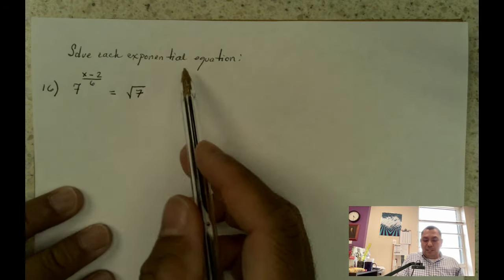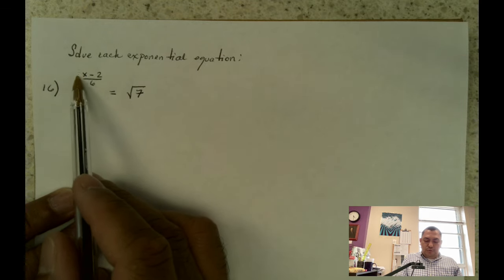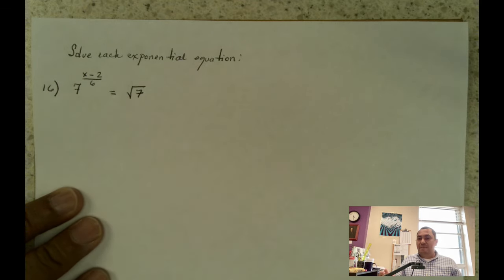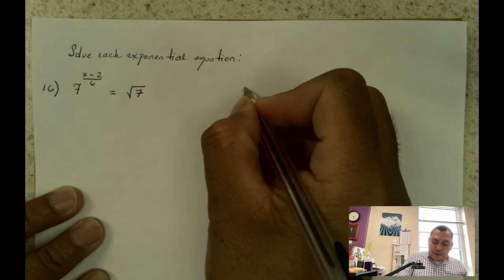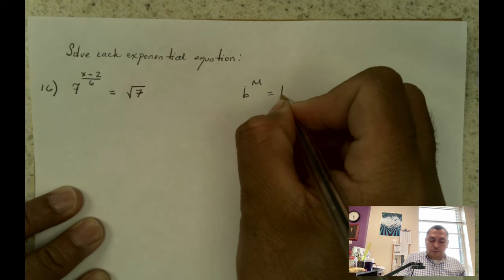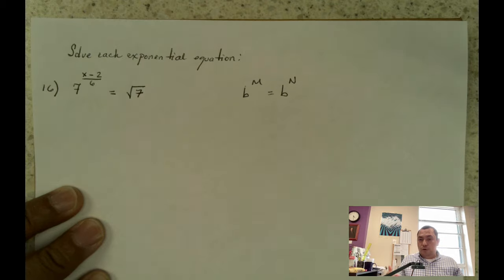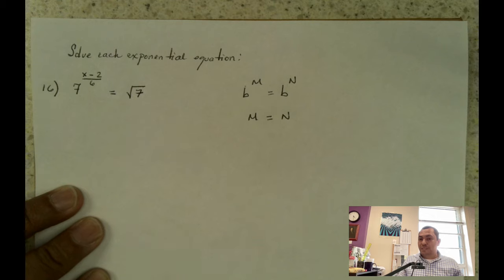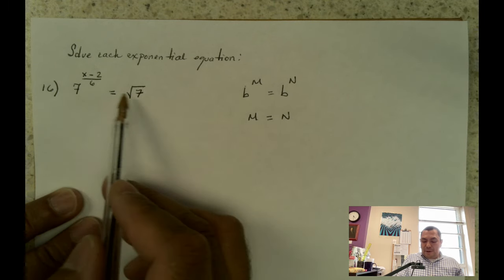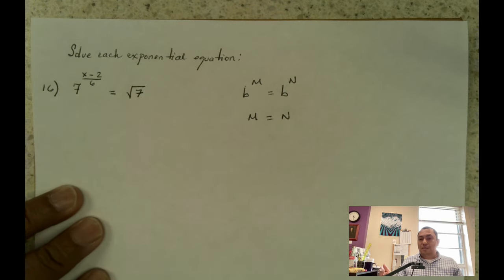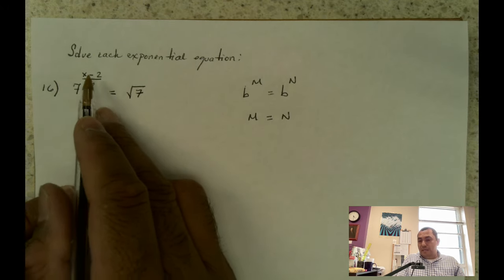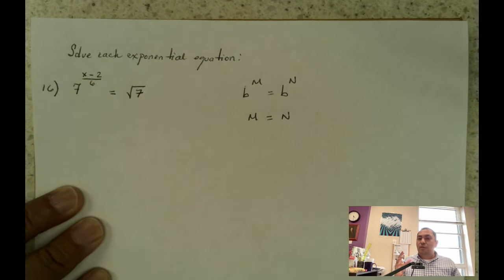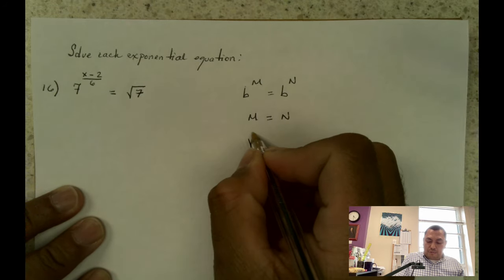So I have to solve each exponential equation. I have 7 to the x minus 2 over 6 equals to the square root of 7. Remember that in class we mentioned that we need the bases to be the same. We need the form b to the m equals to b to the n so we can apply m equals to n. The problem here is the bases are not the same because this is 7 to the x minus 2 and this is the square root of 7. But we can do a manipulation of the square root of 7.